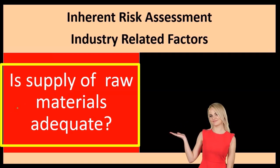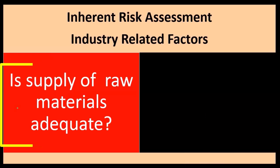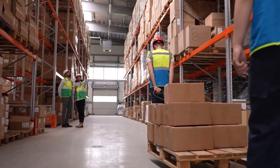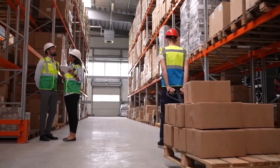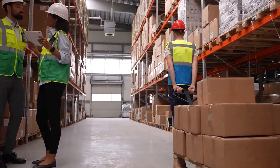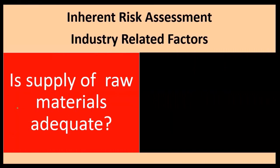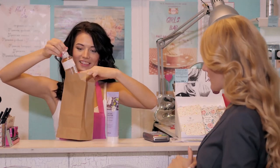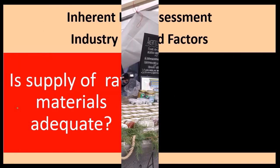For inherent risk assessment, industry-related factors include: is the supply of raw materials adequate? Different industries might have different supply requirements for raw materials. If we're creating inventory, we might question whether raw materials will be available — for example, if we only have a few suppliers or vendors of particular items we need, that could be a problem within the purchasing cycle.